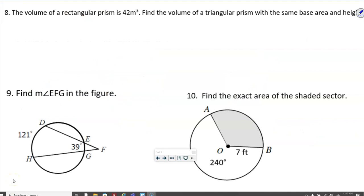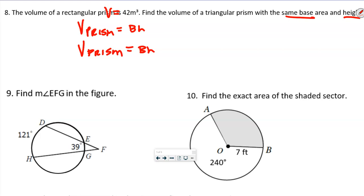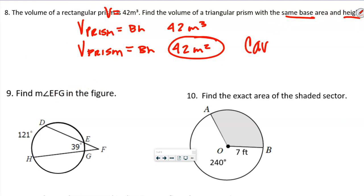The next question says the volume of a rectangular prism is 42 meters cubed. Find the volume of a triangular prism with the same base and height. Both are prisms, so both equal base times height. If the base area and height are the same, by Cavalieri's Principle the volumes are equal. The answer is 42 meters cubed.